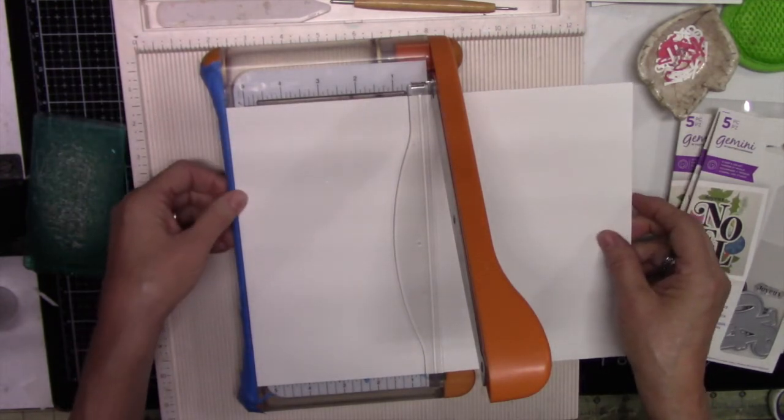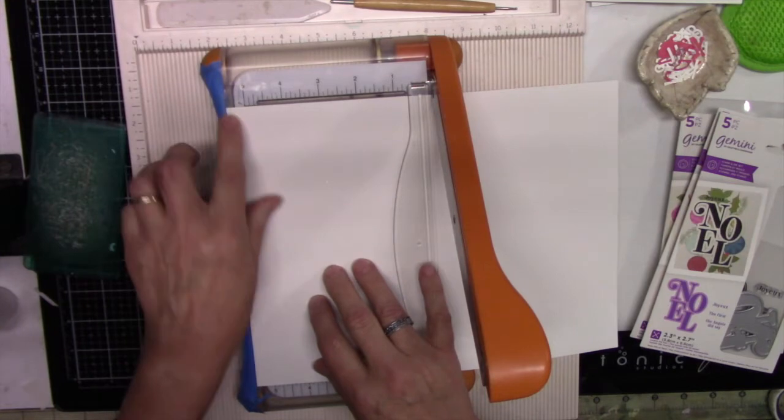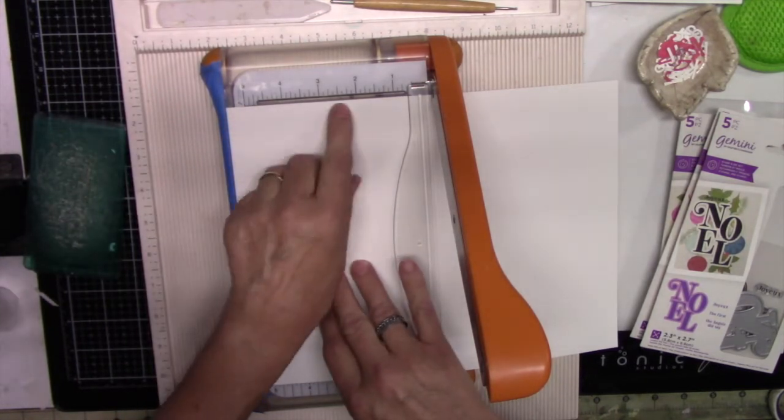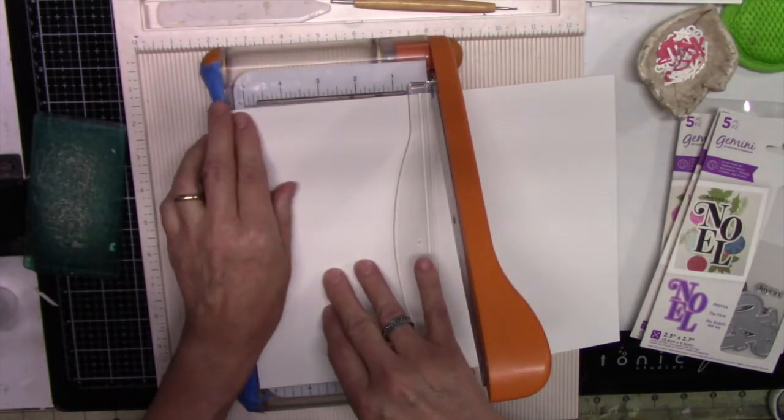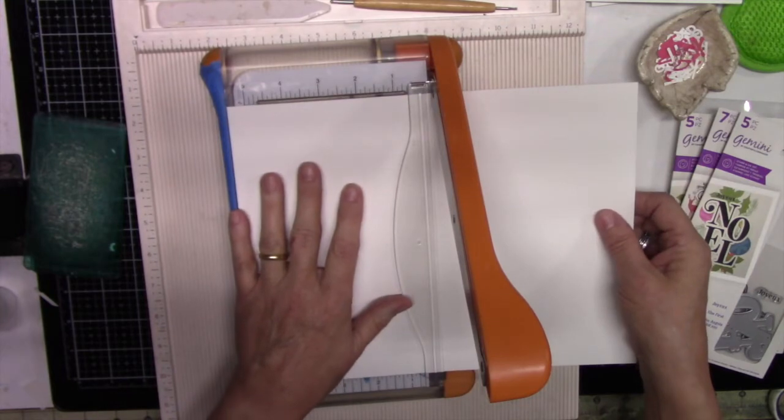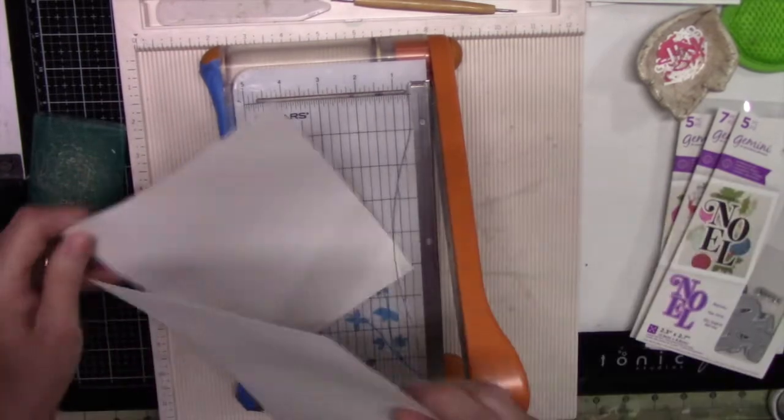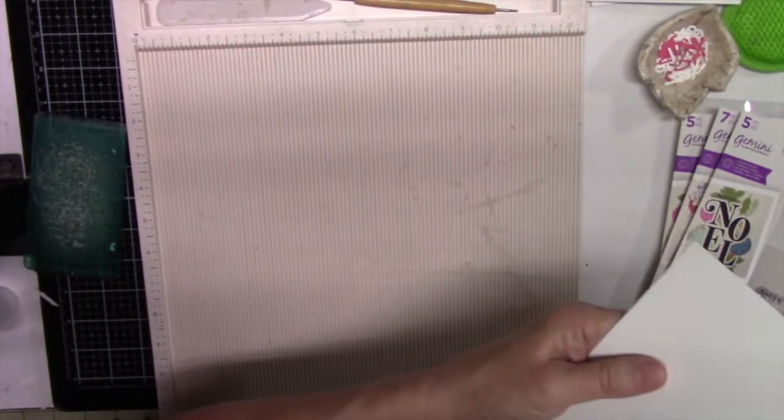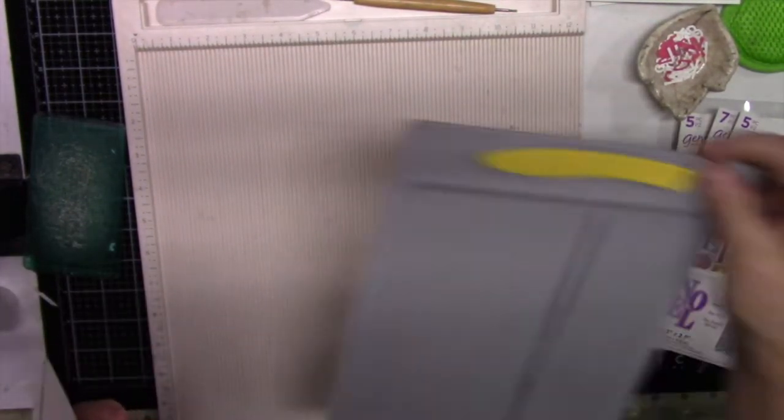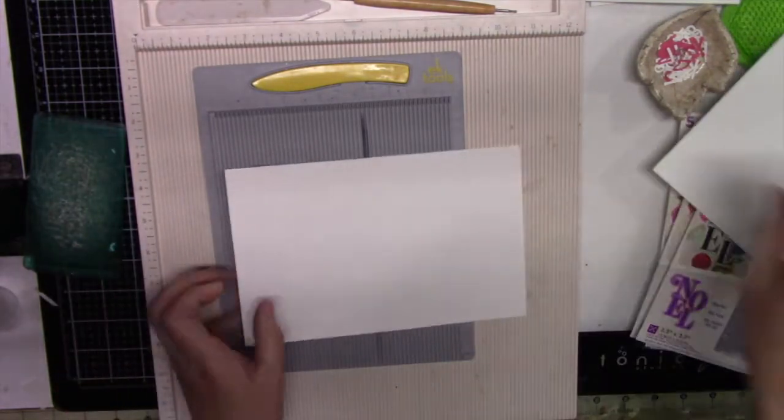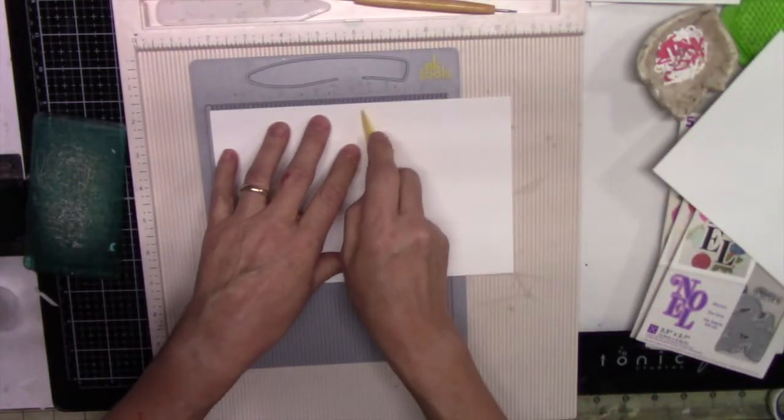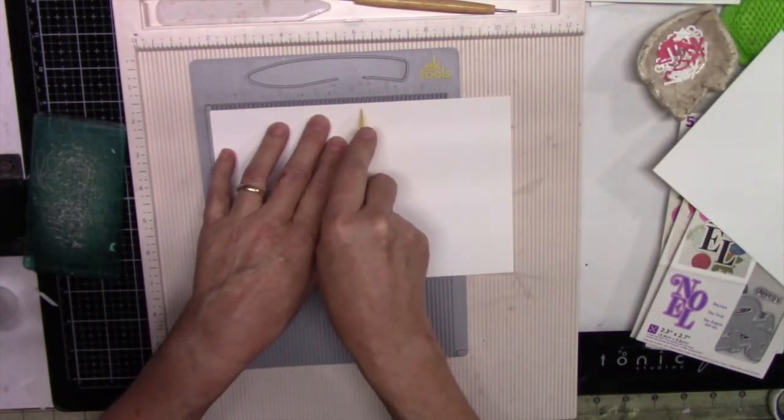It also helps because the painter's tape creates a ridge, so I can butt it against this side, I can butt it against the top ridge like so, and then I can just cut in the middle. And then I have my small little scoreboard, very tiny, very convenient.